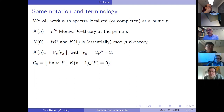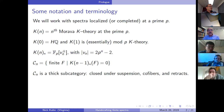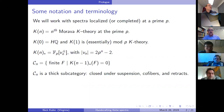Consider all the finite CW spectra that are acyclic in the (n−1)st Morava K-theory; call that C_n. This is an example of a thick subcategory — if you take any homology theory and take all the acyclics, it's closed under suspensions, under cofibers (if two terms in a cofibration sequence are in it, so is the third), and under retracts.